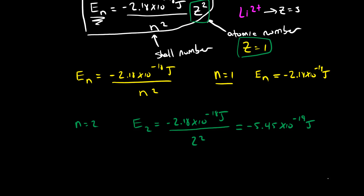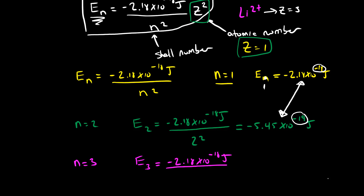Note that when we compare these two values — here we have 10 to the minus 18th for the first level, and 10 to the minus 19th for the second level — the energy of the first level is more negative than the energy of the second level. That has to be true because the first shell is closer to the nucleus. For the third level, the energy equals minus 2.18 times 10 to the minus 18th joules divided by 3 squared, giving minus 2.42 times 10 to the minus 19th joules. The energy of the third level is less negative than the energy of the second level because the third shell is further from the nucleus.